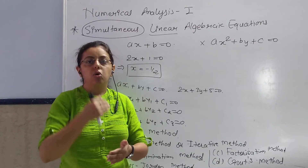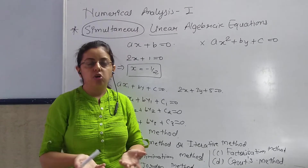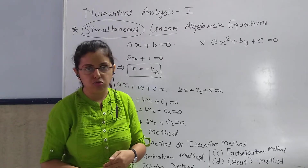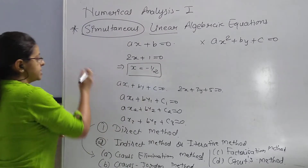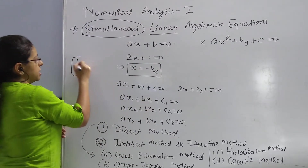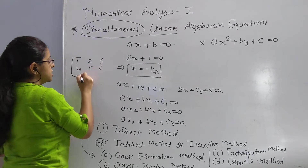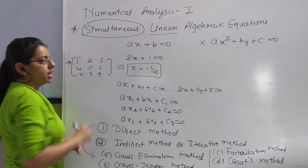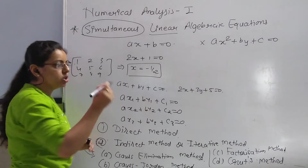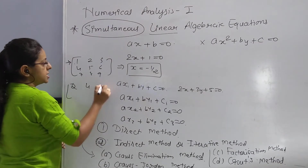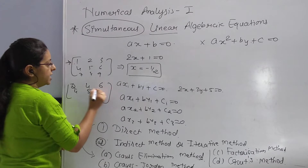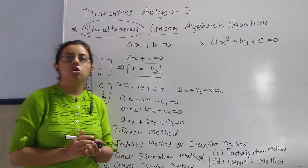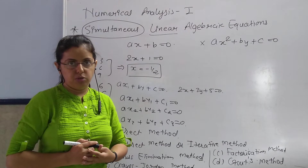Second point of elementary transformation: multiply any one row or one column by any scalar. For example, suppose we have a matrix [1,2,3; 4,5,6; 7,8,9]. If we multiply the first row by 2, we get [2,4,6] and the other rows remain as they are. That is also known as an elementary transformation.